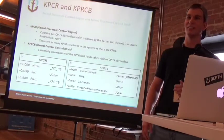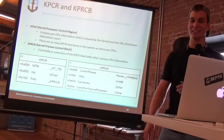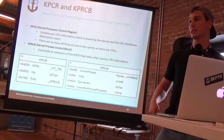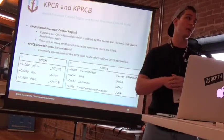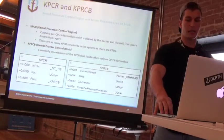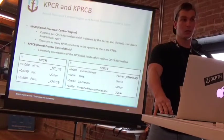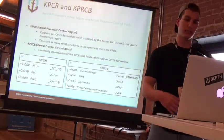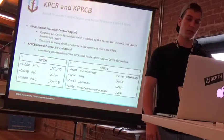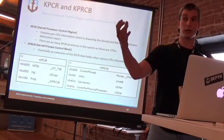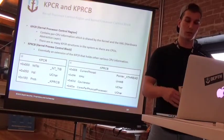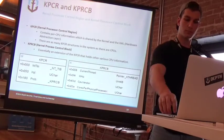Jumping straight into some kernel data structures — we've got the KPCR, which is the Kernel Processor Control Region. It basically contains per-CPU information that the kernel and the hardware abstraction layer use to manage your CPUs. The KPRCB is the Kernel Process Control Block, which is essentially an extension of the KPCR. These aren't the entire structures, just little snippets. If you've ever used a program like CPUID that pulls hardware information, it actually just makes Windows function calls to this structure and pulls information back.